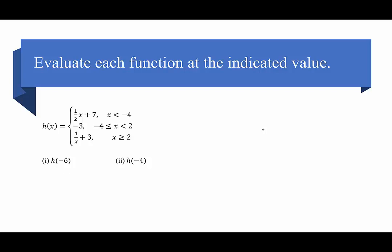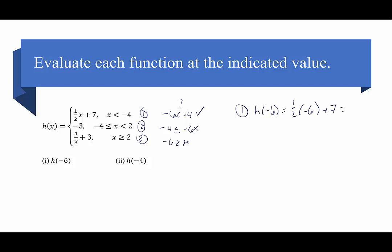Let's look at h of negative 6. We check where negative 6 falls: is negative 6 less than negative 4? Yes, it is, so it goes into piece 1. h of negative 6 equals one-half times negative 6 plus 7. Half of negative 6 is negative 3, plus 7 gives positive 4. So h of negative 6 equals positive 4, or the ordered pair negative 6 comma 4.